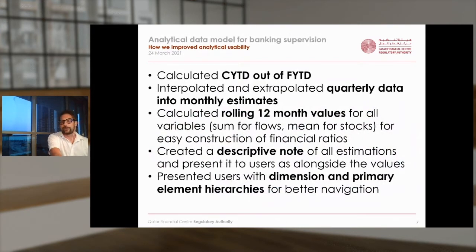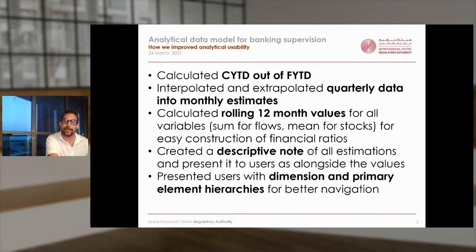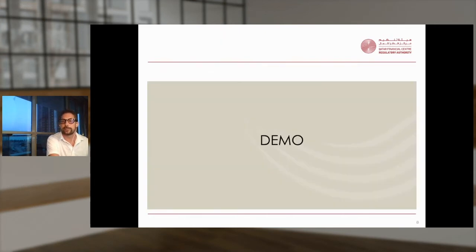So what did we do? We turned all data to be on the same basis. We aligned year-to-date data to follow calendar years. We made quarterly data look monthly. We added 12-month rolling averages and sums to enable like-for-like time series analysis of ratios. We also made sure that the user can always check what the underlying reported numbers are. And finally, we made the right data easier to find by bringing the taxonomy dimensions and hierarchies to the front-end.